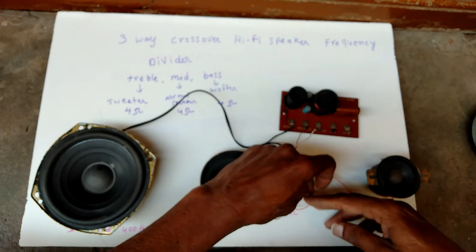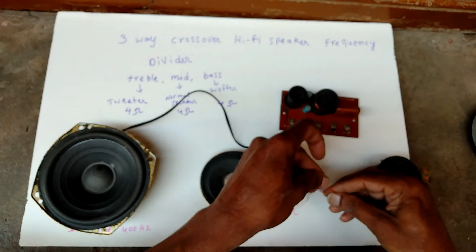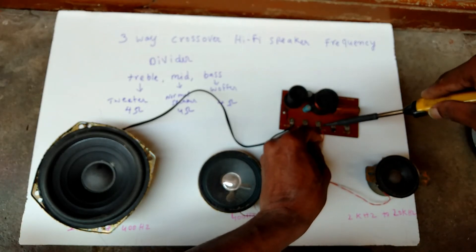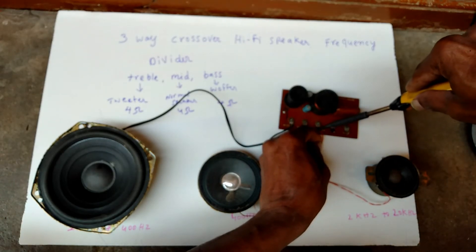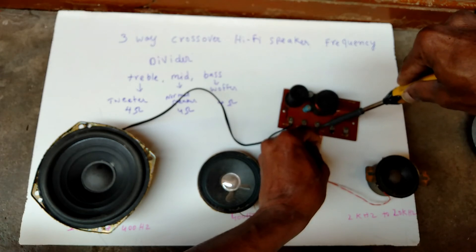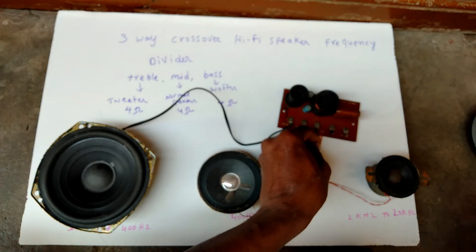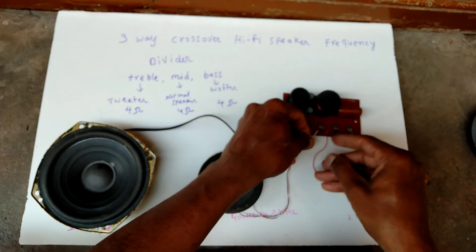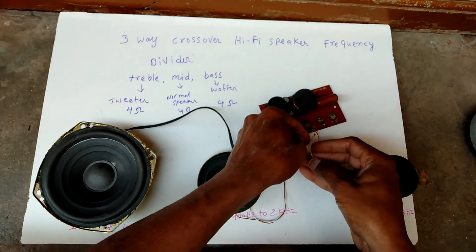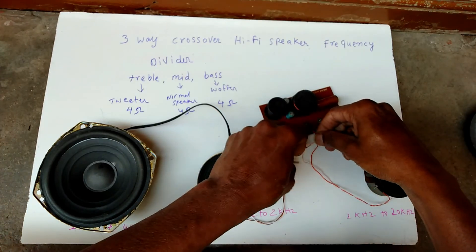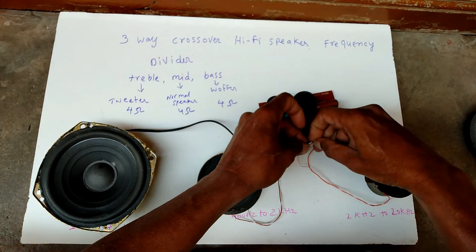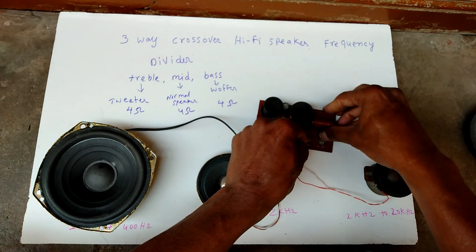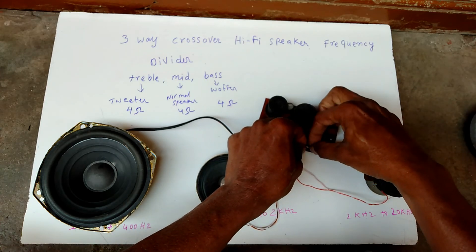This tweeter positive connection, here we have to give. Remaining these three, we have to connect ground here. All ground connections, here with this common point we have to solder.